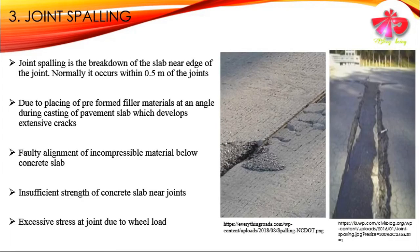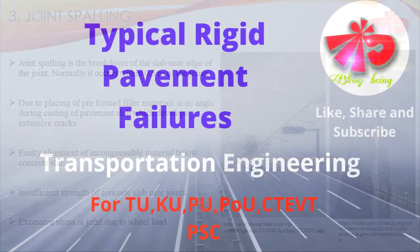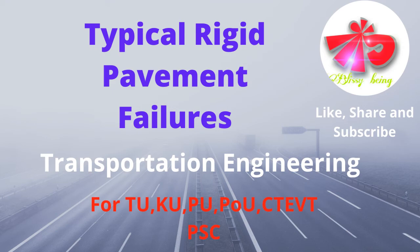The third type of failure pattern is joint spalling, which is the breakdown of the slab near the edge of the joint. It occurs due to placing of preformed filler materials at an angle during casting of the pavement slab, causing extensive cracks. Faulty alignment of incompressible material below the concrete slab, insufficient strength of concrete slab near joints, and excessive stress at the joint due to wheel load may also cause joint spalling.